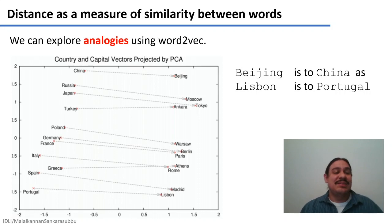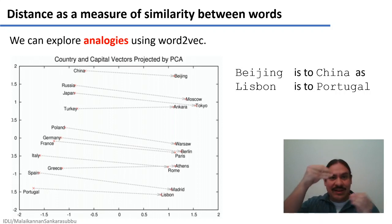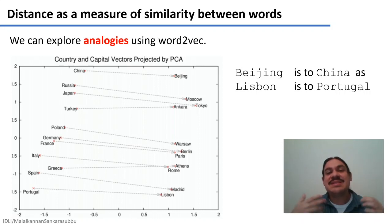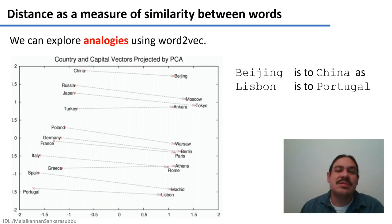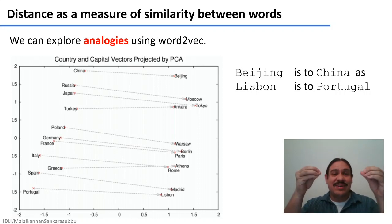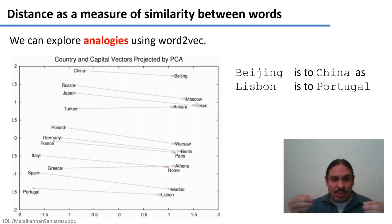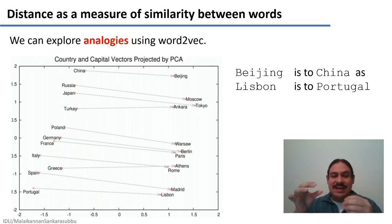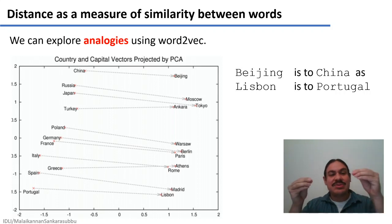As we mentioned with the capitals — with Rome and Italy and London and England — the distances between these are going to be very similar. So we can calculate analogies using a word2vec. If two words have very similar distances, it means that the relationship is roughly the same. For example, Beijing and China have a certain similarity, and Lisbon and Portugal have a certain similarity. So Beijing is to China as Lisbon is to Portugal in similarity, and the capitals are going to have roughly the same distance to the countries amongst all of them.